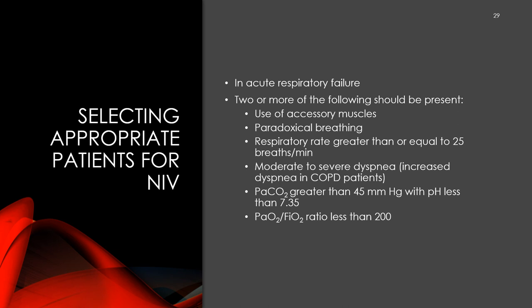Selecting appropriate patients for NIV: if someone is in acute respiratory failure, especially hypercapnic respiratory failure, NIV is the go-to first choice. Alternatively, if two or more of the following are present: accessory muscle use, paradoxical breathing, respiratory rate greater than 25, moderate-to-severe dyspnea, PCO2 greater than 45 with pH less than 7.35, or PF ratio less than 200 — those are additional indications. You need two or more of those criteria present to consider NIV.